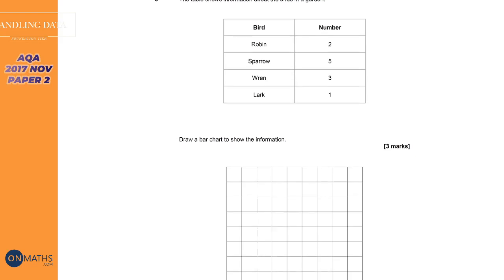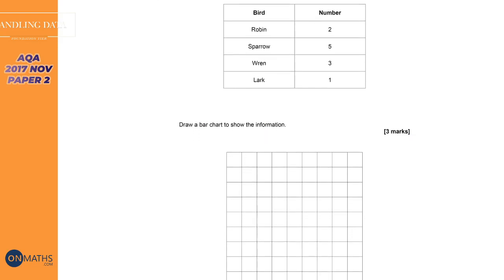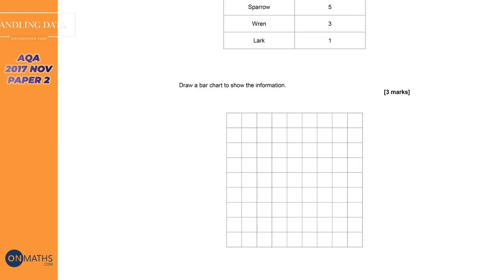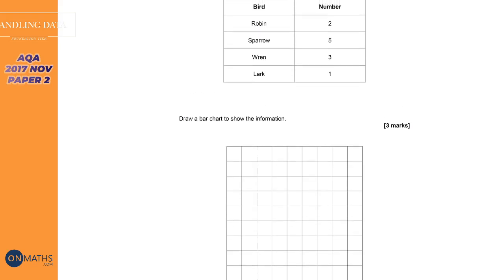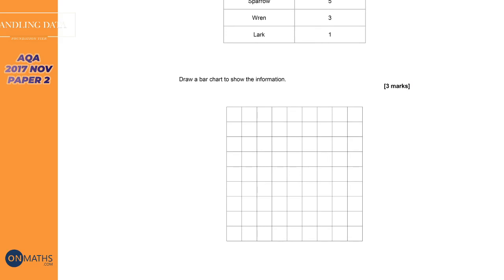So in this bar chart, well we're asked to draw a bar chart. So first things first, we've got to work out our scale. And so looking at this, going upwards, well the maximum is 5, so what we can do is go up in 1. So 1, 2, 3, 4, 5. And why not just go the full way.